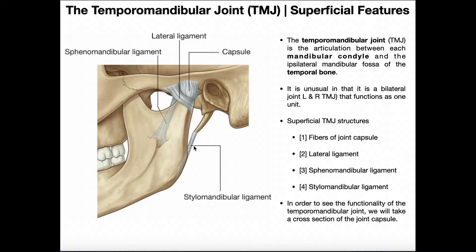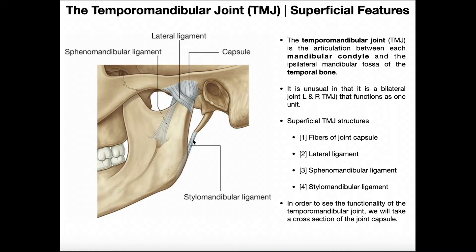There are a couple of other ligaments that indirectly stabilize this joint. The first is the stylomandibular ligament, which connects the styloid process to the medial or deep part of the mandible — not the external surface but the internal, more medial aspect. The other is the sphenomandibular ligament, connecting the sphenoid bone — which is deep to both the lateral ligament and the joint capsule — to the deep or medial part of the mandible. So these three ligaments stabilize the TMJ: the lateral ligament directly, and the sphenomandibular and stylomandibular ligaments indirectly.